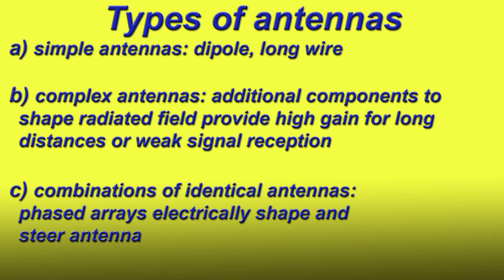There's basically three types of antennas. The simple antenna, which is basically your dipoles and your long wires. The complex antennas, which add additional components to shape the radiation field, provide higher gain for longer distance, or weak signal reception. Then there's the combination antenna, like phased arrays, which electrically shape and steer the antenna.